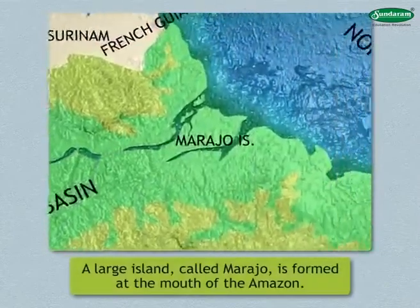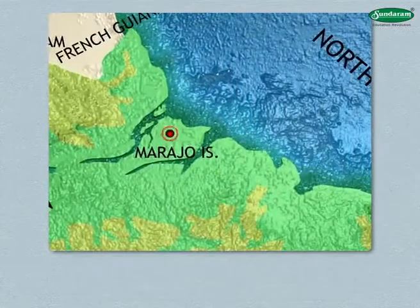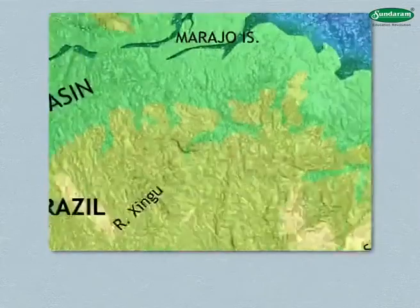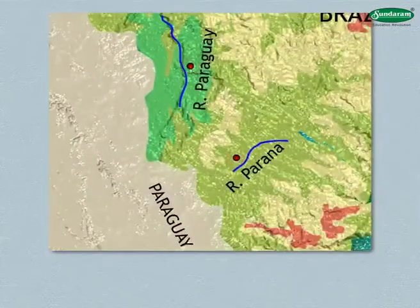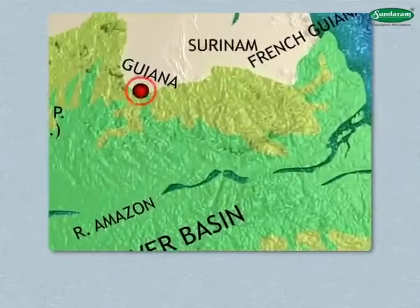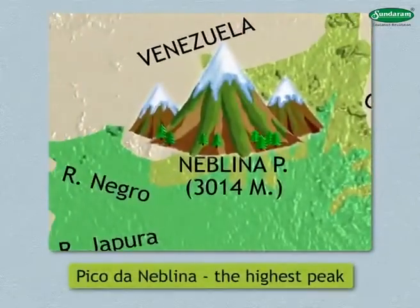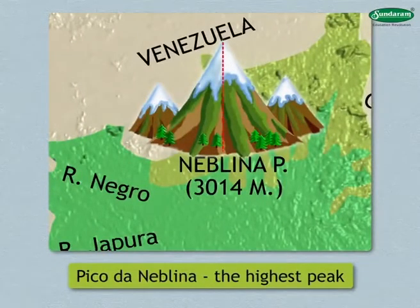A large island called Marajo is formed at the mouth of the Amazon and is surrounded by fresh water. Rivers Parana and Paraguay originate in the Brazilian Plateau and flow towards the south. The Guiana Highlands are located to the north of the Amazon Basin. The highest peak in Brazil is Pico da Neblina, with a height of 3014 meters.